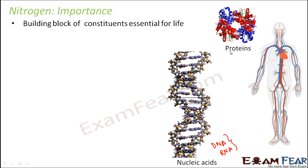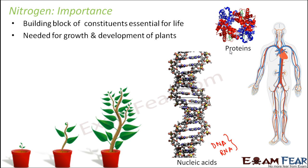Nitrogen is needed for the structural construction of living organisms. Not only animals — even for plants, nitrogen is very important. It is one of the most important nutrients for the growth and development of plants, and is called a macronutrient — those nutrients which are needed by plants in large amounts. Plants get nitrogen through the nitrogen cycle: nitrogen in the atmosphere gets converted into other compounds of nitrogen, which remain within the soil and are then taken up by the plants through their roots.